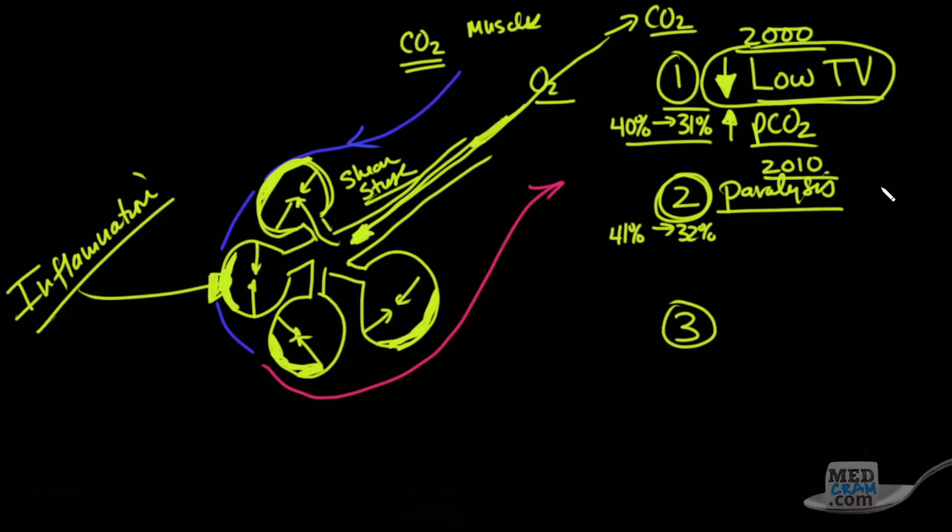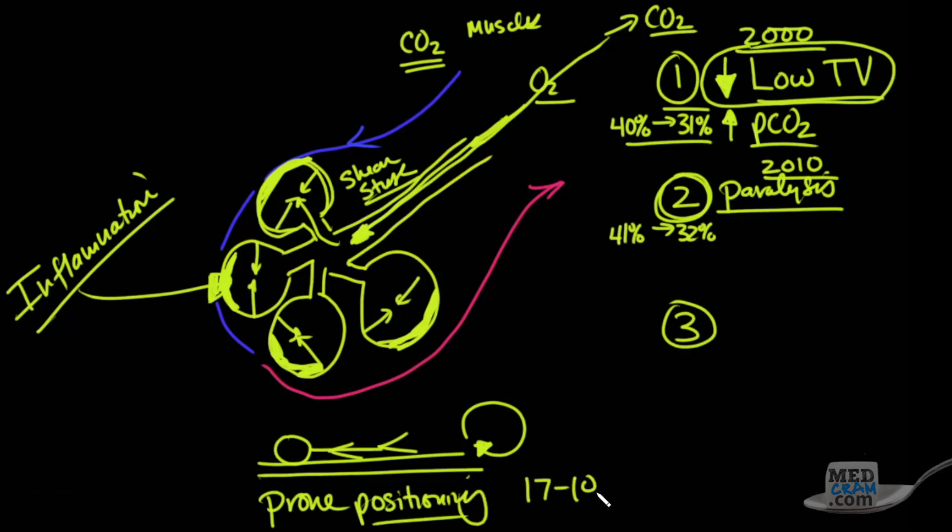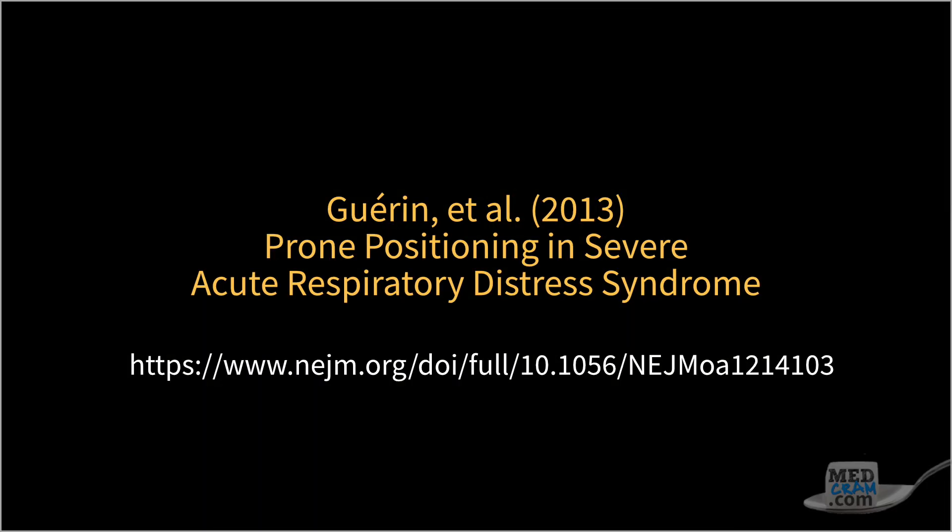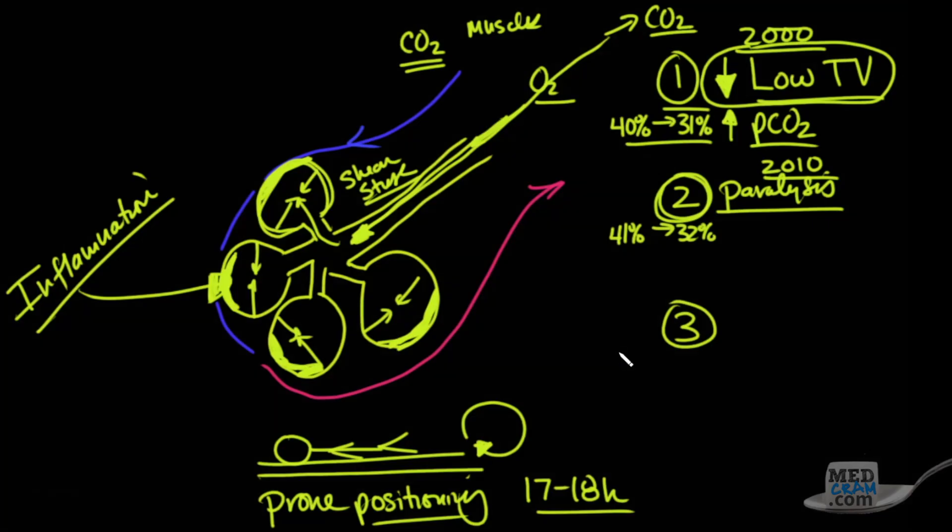What we also started to realize is that patients in the hospital, for whatever particular reason, if you ever look at them in bed, they're on their back. And what we decided to do was flip them over, and there was a number of reasons for this, so that their belly was down and that their back was up. We call this prone positioning. And if you do this for about 17 to 18 hours a day, you can actually decrease the mortality they found from 33% down to 16%. And this paper was published back in 2013.